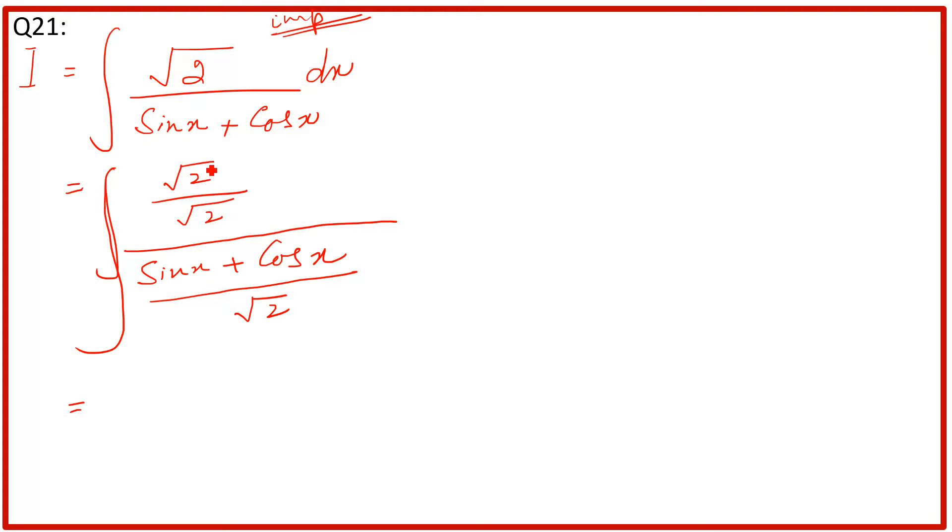Now what will happen? The numerator, after cancellation, becomes 1. And in the denominator, we have sin x over √2 plus cos x over √2. I will do it in one step. I can write it like this: the numerator is 1, and we can write the denominator this way.